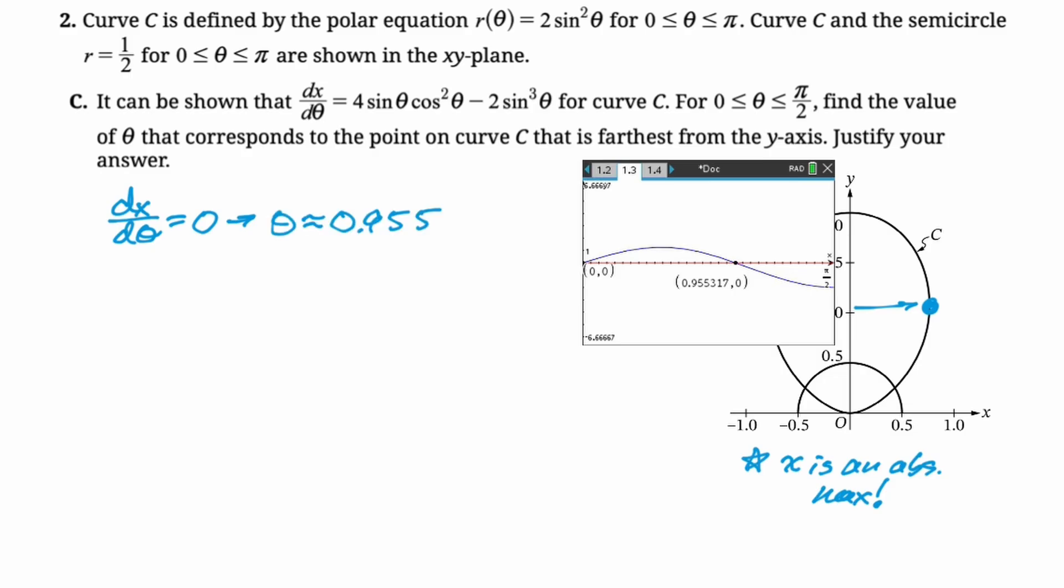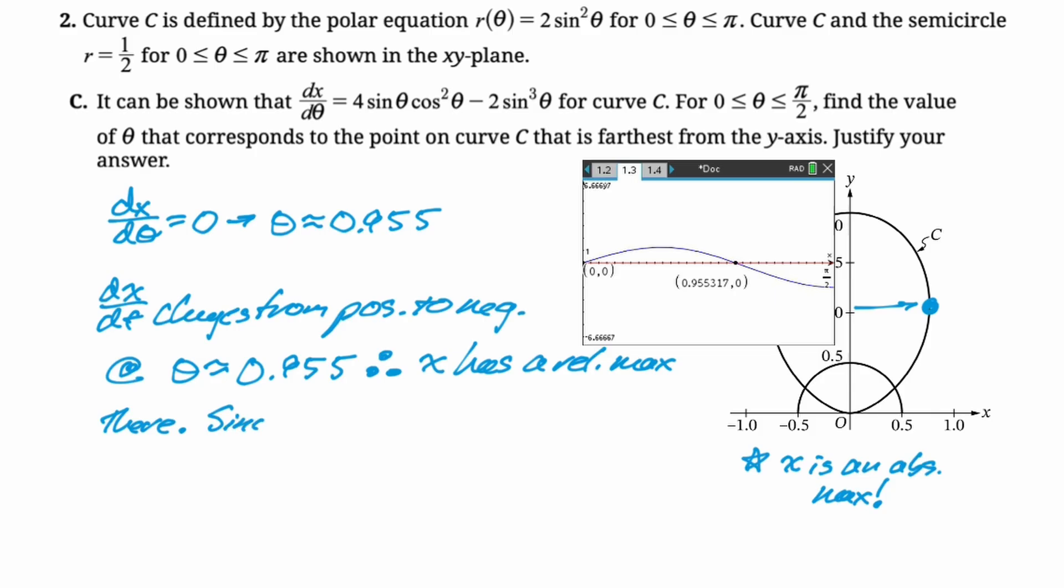Now we can see in our graph here that dx/dθ is going from positive to negative there. We're just going to write up the relative maximum justification there because our dx/dθ is going from positive to negative. So we have a relative maximum. So I'm going to write that dx/dθ changed positive to negative at this theta, X has a relative maximum there. Now we're also going to say there's only one critical point and it's a relative maximum. Therefore it must be the absolute maximum.